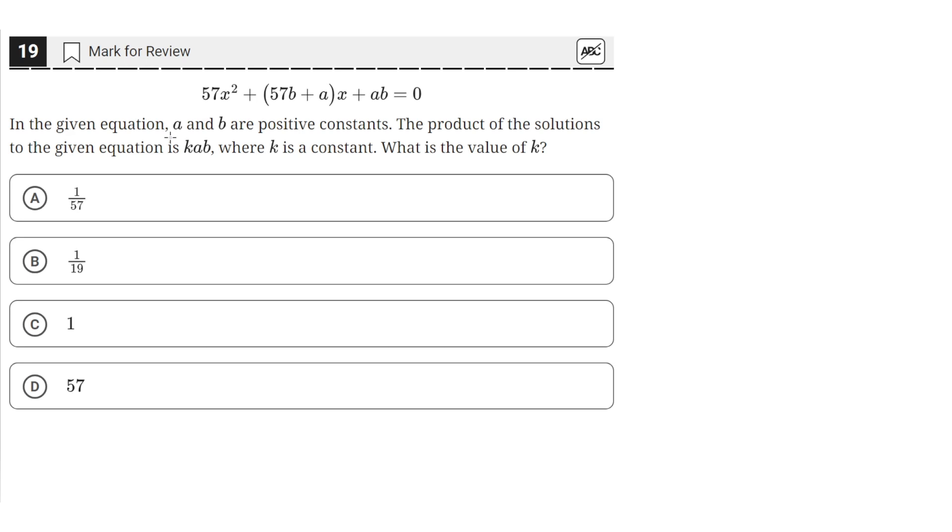In the given equation, a and b are positive constants. The product of the solutions to the given equation is kab, where k is a constant. What is the value of k?